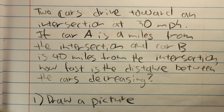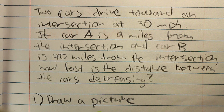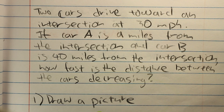In this related rates problem, we are trying to find the distance between two cars as they drive towards an intersection. Specifically, the two cars are driving towards the intersection at 30 miles per hour. One car is nine miles from the intersection while the other car is 40 miles from the intersection.